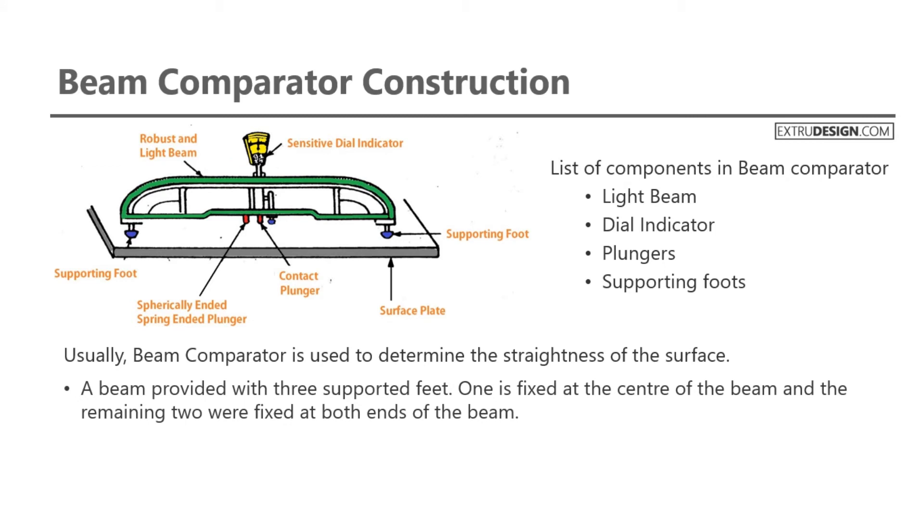A beam is provided with three supported feet. One is fixed at the center of the beam, and the remaining two are fixed at both ends of the beam. The center foot is fixed, whereas the other two at the ends are relatively adjustable.